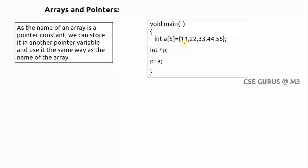Let's say I want to print the value 11. How many different ways can I print value 11 whenever I take a new pointer variable and assign it? All those things we will see. The name of an array is a pointer constant - we can store it in another pointer variable and use it the same way. Even if you don't take this variable you can get the answer, but let's see how differently you can get the answer.